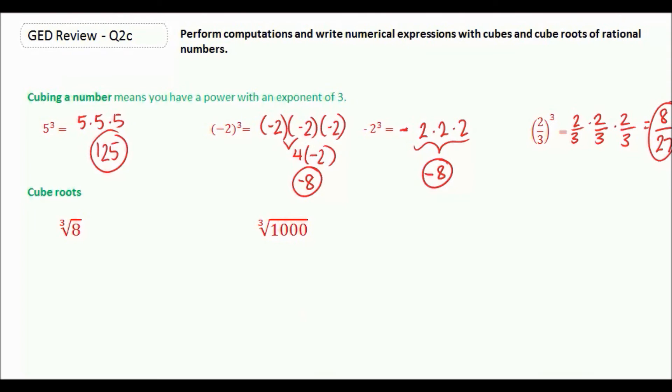So taking the cube root of a number means finding a number that when you multiply it by itself two other times, you get whatever number is underneath it.